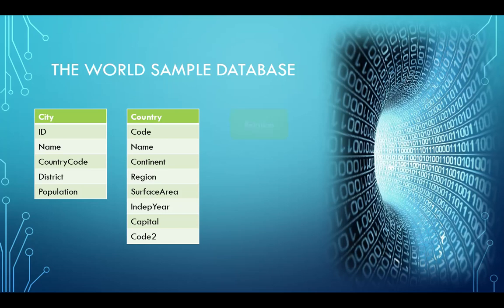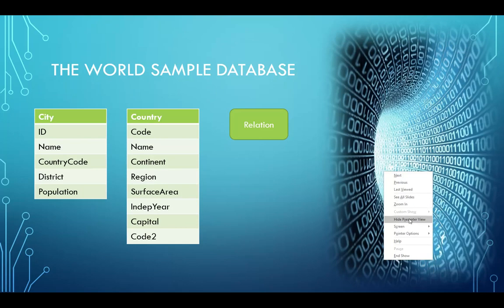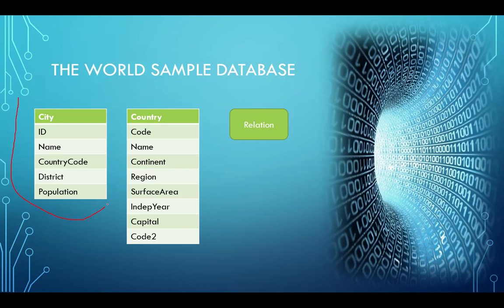The first term we want to introduce is the idea of a relation. In database terminology, a relation is basically a table — it is a group of data that is put together inside one single table. We typically refer to this as a table, but formally it is referred to as a relation. That's actually where we get the term 'relational database' from — this idea that we have all of these relations inside a database. So if you hear the term relation, think table.